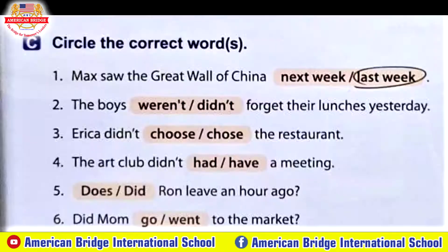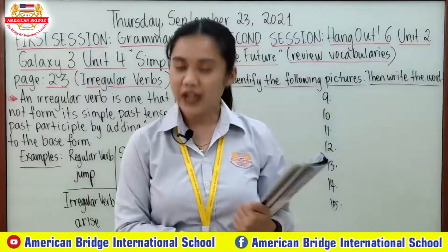Here are our answers for part C. Number one: Max saw the Great Wall of China last week. Number two: the boys didn't forget their lunches yesterday. Number three: Erica didn't choose the restaurant. Number four: the art club didn't have a meeting. Number five: did Ron leave an hour ago? And number six: did Mom go to the market? Did you get it, everyone?